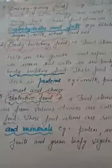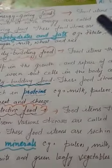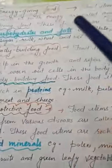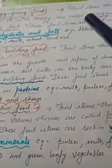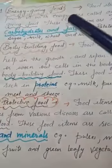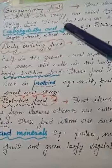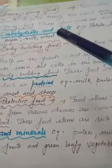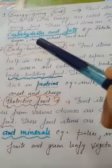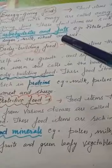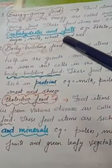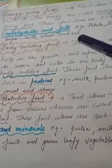First is energy giving food. Food items that provide us with energy are called energy giving food. The nutrients present in energy giving food are carbohydrates and fats. Examples include potato, banana, sugar, milk, wheat, and rice.